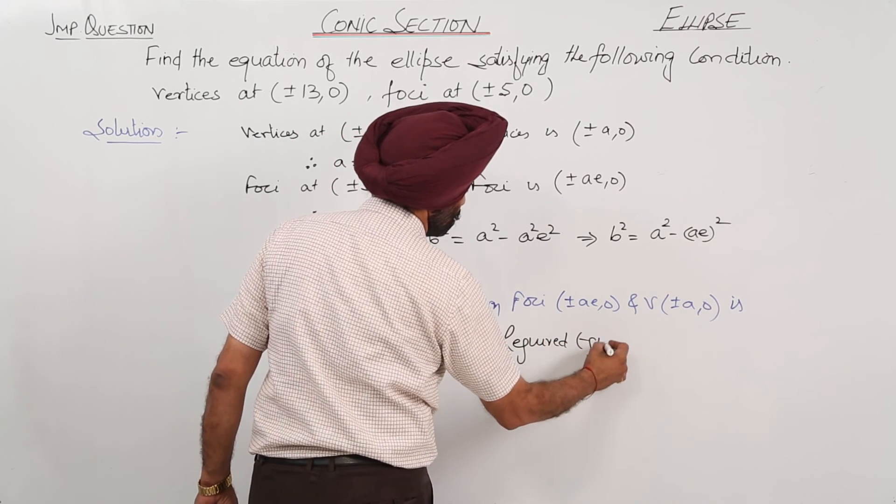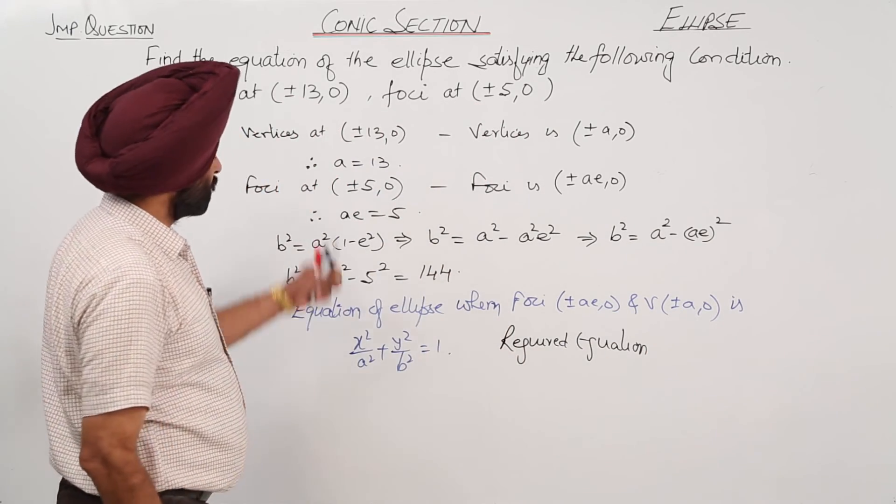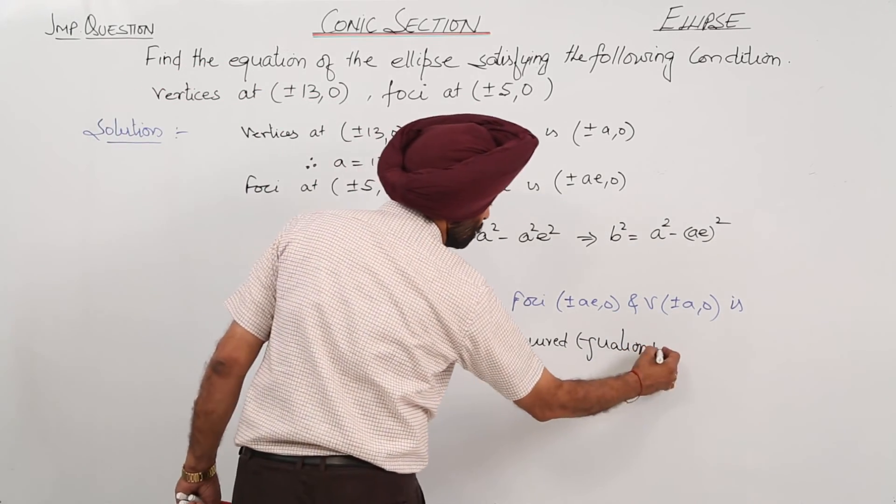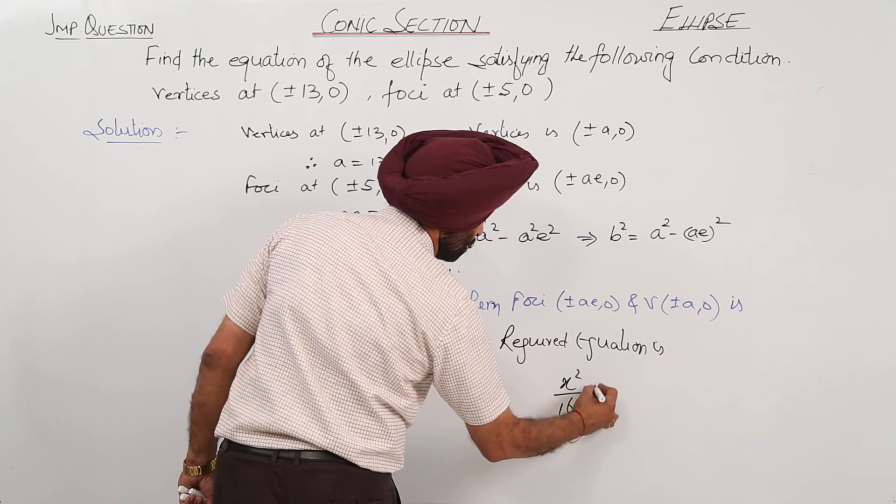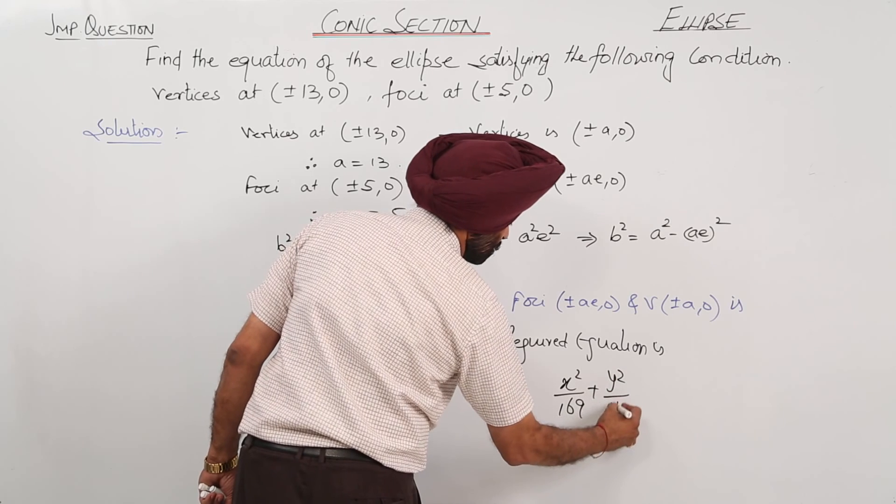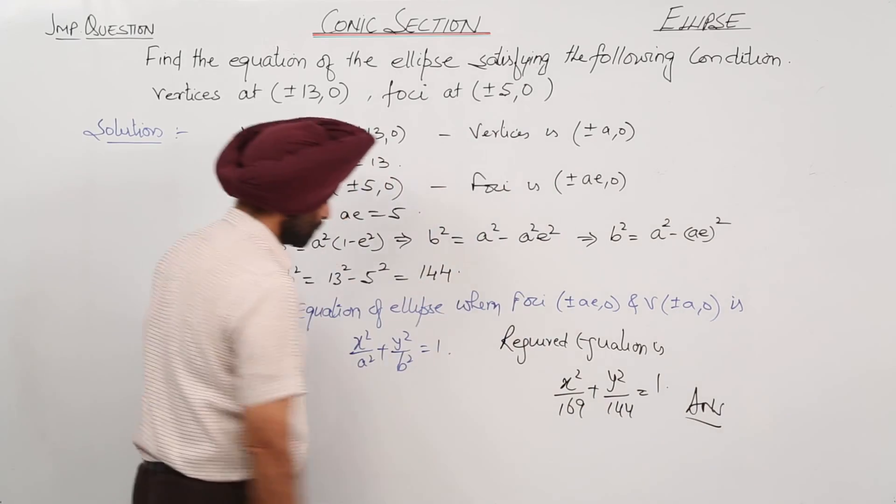Required equation, a is what? 13. So, required equation is x square upon 169 plus y square upon 144 is equal to 1. Answer.